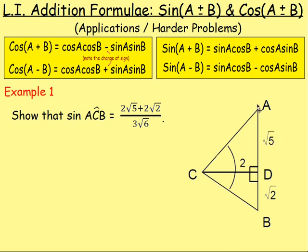Example 1: show that sin(ACB) is equal to (2√5 + 2√2) / (3√6). We've got this triangle here, ABC, and it's been split into two right-angled triangles with this line CD. We know the length of CD is 2, we know the length of AD is √5, and we know the length of BD is √2. What we're asked to do is work out sin(ACB), or really just prove it's equal to this fraction.